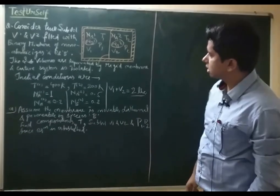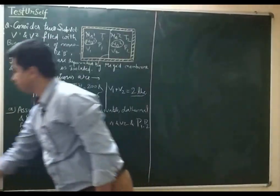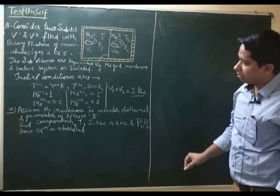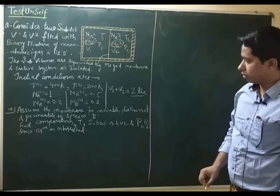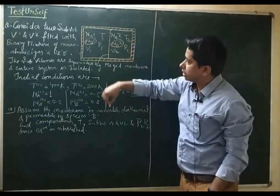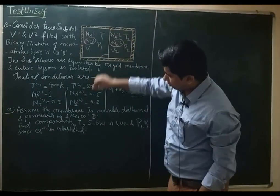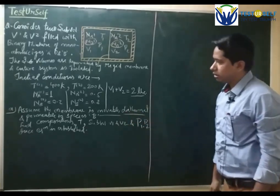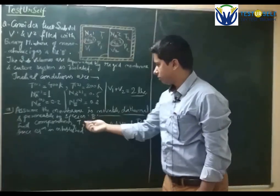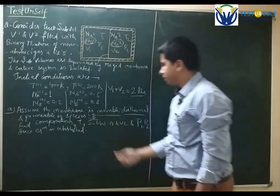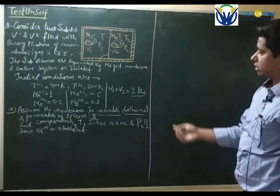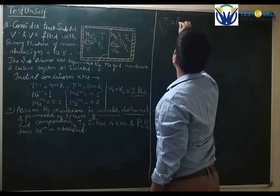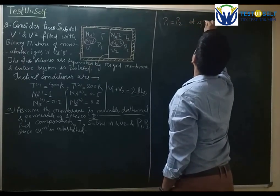In Part A, assume the membrane is movable, diathermal, and permeable to species B only. The support has been removed, so the membrane is movable. As it is movable, pressure on the left-hand side will equal pressure on the right-hand side at equilibrium conditions.